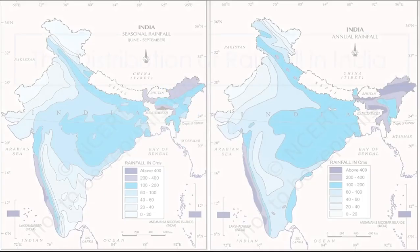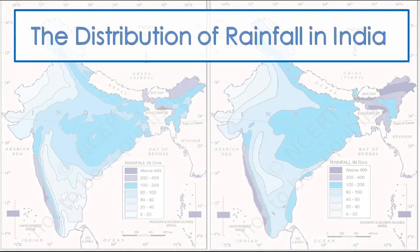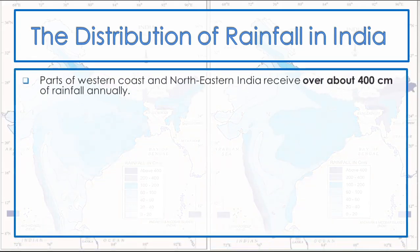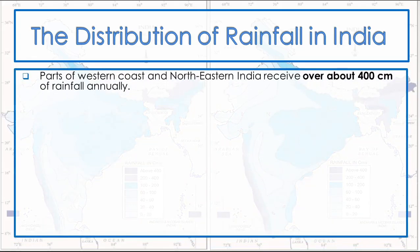The Distribution of Rainfall in India: parts of the Western Coast and North-Eastern India receive over about 400 cm of rainfall in the valley.